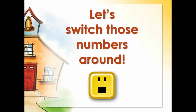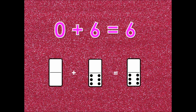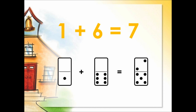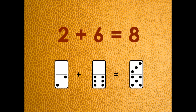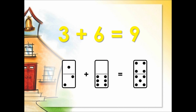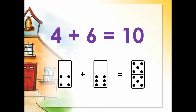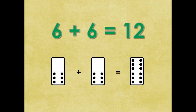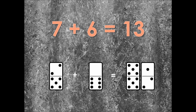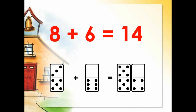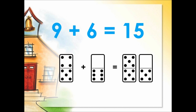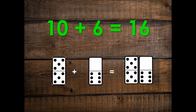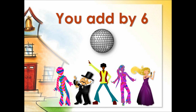Let's switch those numbers around! Zero plus six is six. One plus six is seven. Two plus six is eight. Three plus six is nine. Four plus six is ten. Five plus six is eleven. Six plus six is twelve. Seven plus six is thirteen. Eight plus six is fourteen. Nine plus six is fifteen. Ten plus six is sixteen. That's the way you add by six.